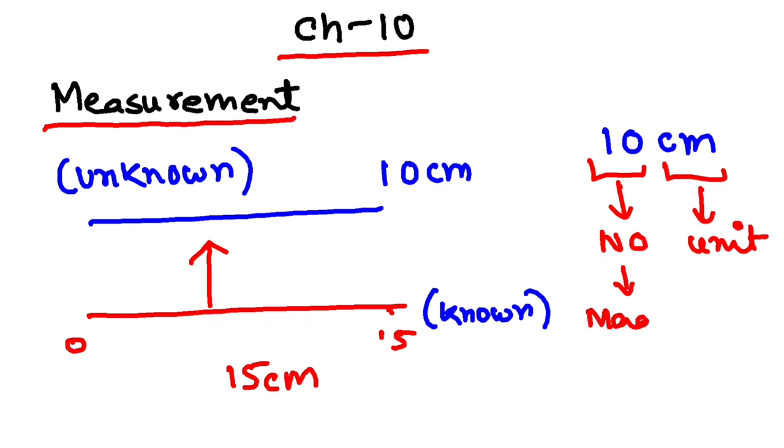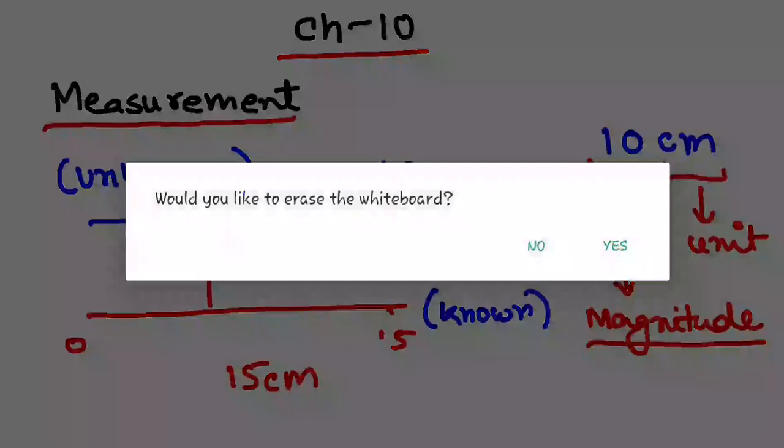Let us take another example. Suppose if I ask you what is your weight, people are going to answer, sir my weight is suppose 40 kg. So this 40 here, the number, is called the magnitude.